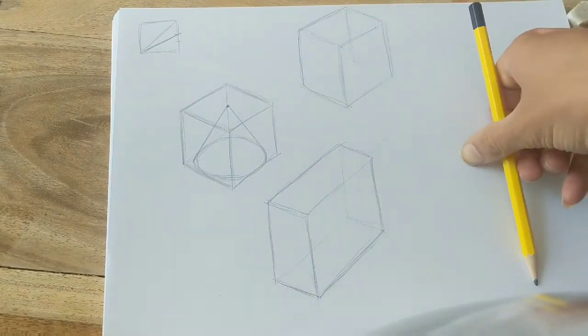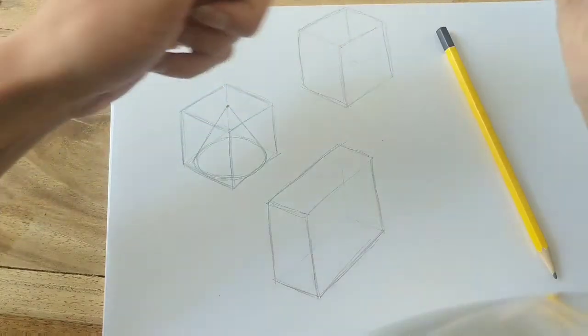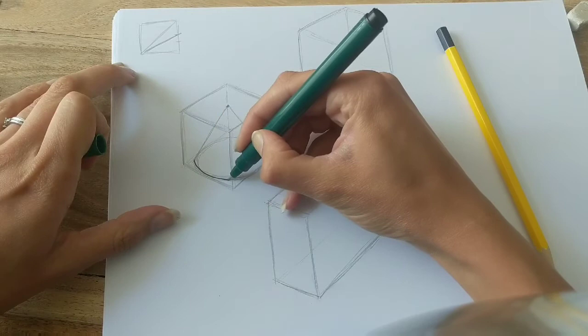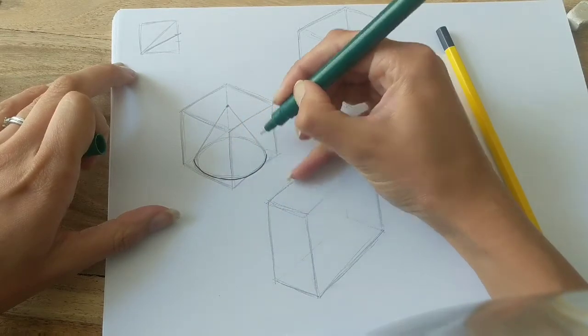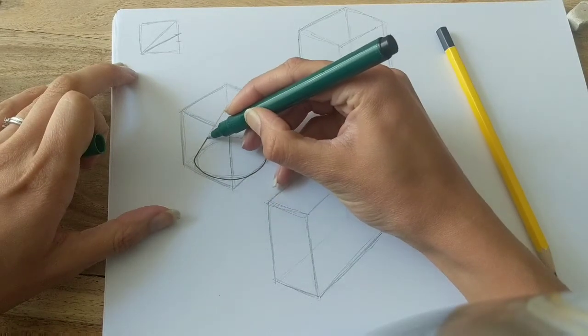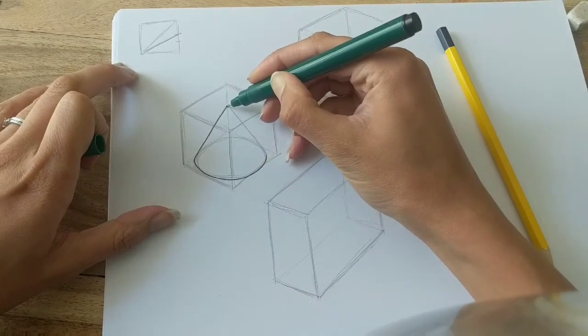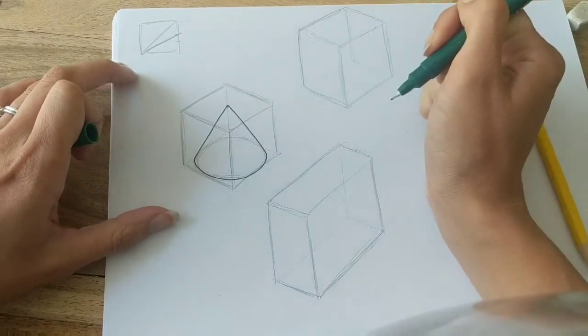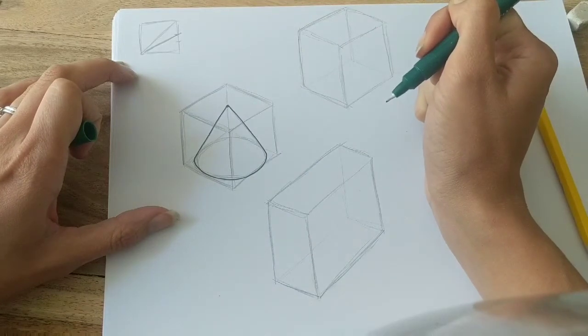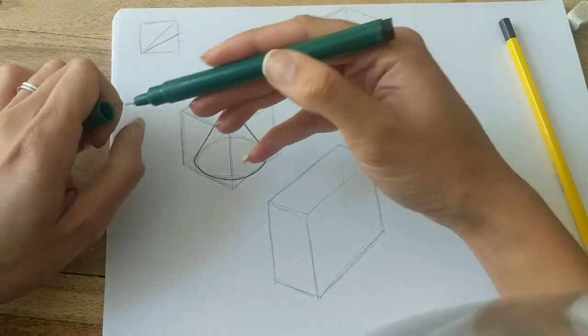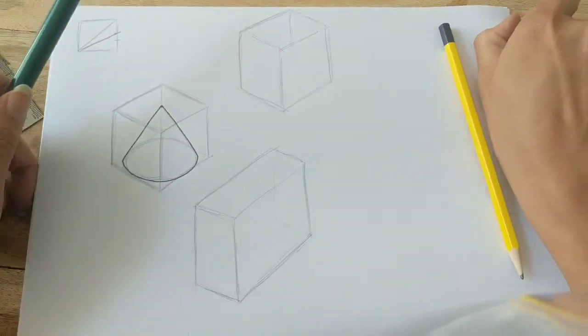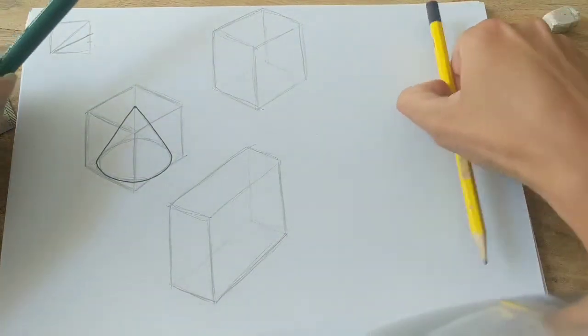Now I'm just going to go around my edges in a fine liner. Remember, you wouldn't see that other part of the ellipse if that was a solid object. So you're only going around the lines that you would see if it was a solid object, just like we did in the last two videos.